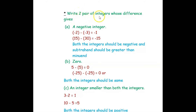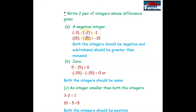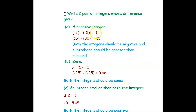The next question is to write two pairs of integers whose difference gives a negative integer. Difference means we subtract two integers. So negative 3 minus negative 2 becomes negative 3 plus 2, which equals negative 1. And 15 minus 30 equals negative 15. So both integers should be negative, or the subtrahend should be greater than the minuend, for the answer to be a negative integer.